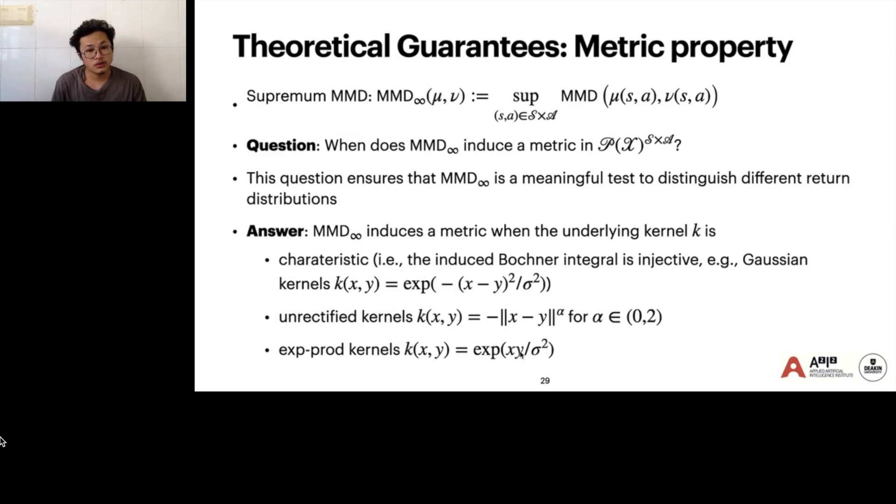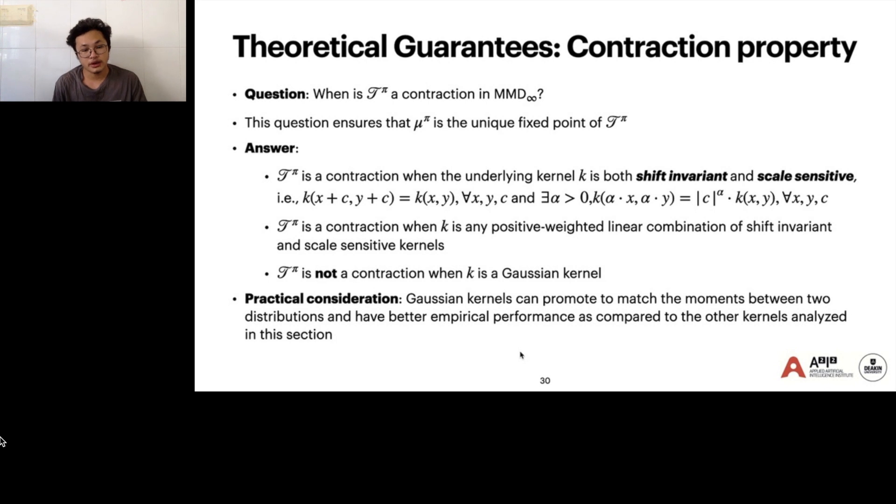There are some theoretical guarantees for our framework. The first is about the metric property. We work with infimum MMD. The infimum MMD induces a metric when the underlying kernel is characteristic, for example, Gaussian kernels, or when it is unrestricted kernels, or exponential product kernels. So it's a vast number of kernels that can guarantee the metric property.